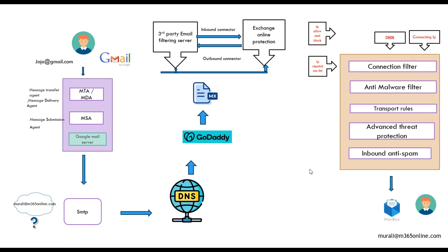Once the email passes the inbound anti-spam policies, it is delivered to the mailbox. As soon as the email is delivered, it is scanned against inbox rules configured by the end user. If mailbox forwarding is enabled, the mail will be forwarded to the respective mailbox. Once inbox rules, mailbox forwarding, auto-replies, and spam settings are all processed, the email is finally delivered to the inbox of murally at m365only.com.